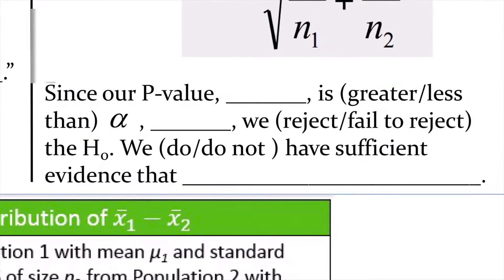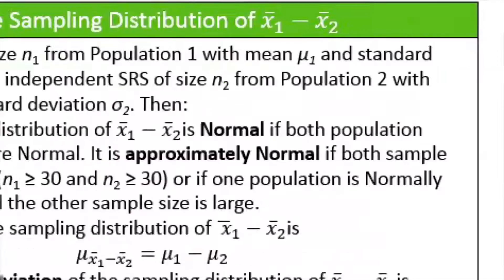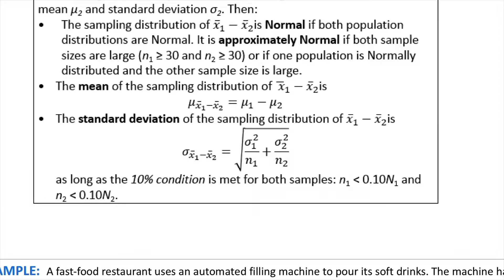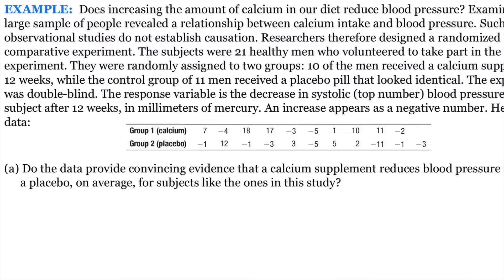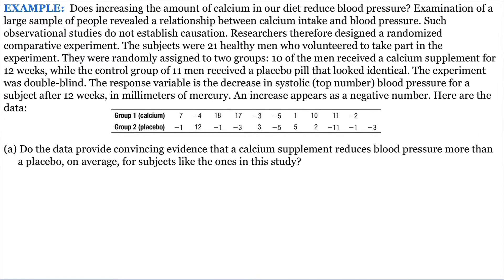Now our null is always going to be this, our alternative will be greater than, less than, or not equal to. Below it is the t score, how to calculate the t. It's the differences between them minus zero, so you don't need to write this minus zero part. Now let's go to the last example, second to last page.